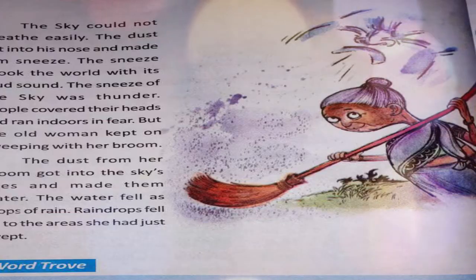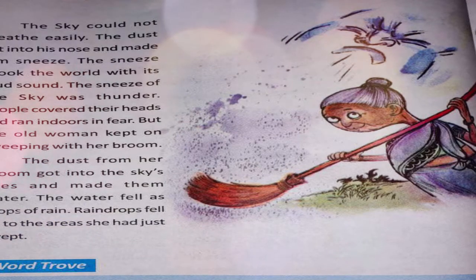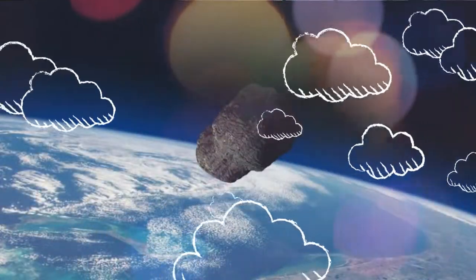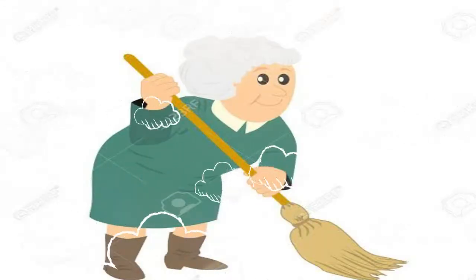All day long the old woman swept and swept. Inside her hut she swept, outside she swept, and dust rose all around her in brown clouds. Without spreading water, if we sweep, dust rises. The sky could not breathe easily — sweeping and dust is always problematic and allergic. The dust got into the sky's nose and made it sneeze. The sneeze shook the world with its loud sound. The sneeze of the sky was thunder.